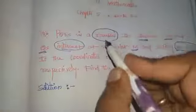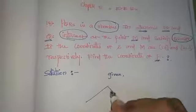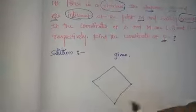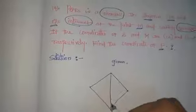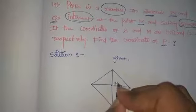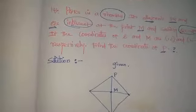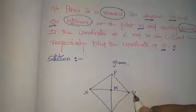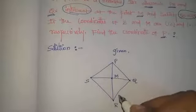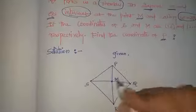Now let's draw the rhombus PQRS diagram. Here are the diagonals. The diagonals intersect at midpoint M. The diagonal names are PR and SQ. I am going to show you QS and PR diagonals. The two diagonals intersect at point M.